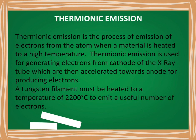Now we shall discuss what thermionic emission is. Thermionic emission is a process of emission of electrons from the atom when a material is heated to a high temperature. When you heat a material to a very high temperature, the electrons present in the atom of that material get ejected out of the atom and travel to the surface of the material. This process is known as thermionic emission.